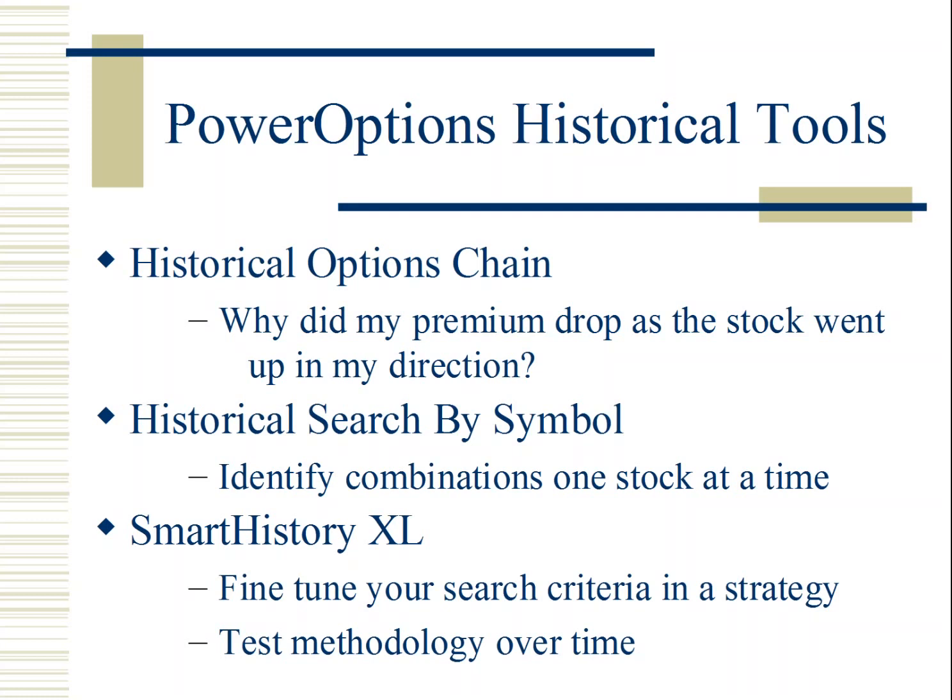The historical Search by Symbol tool works like the regular Search by Symbol tool, but you can go back in time. This helps you identify which combinations work best over an extended period — is it better to go with the higher percentage return, or the higher net credit? And of course, the most important tool is fine-tuning your search criteria in a given strategy using the Smart History Excel, where you test your methodology over time.